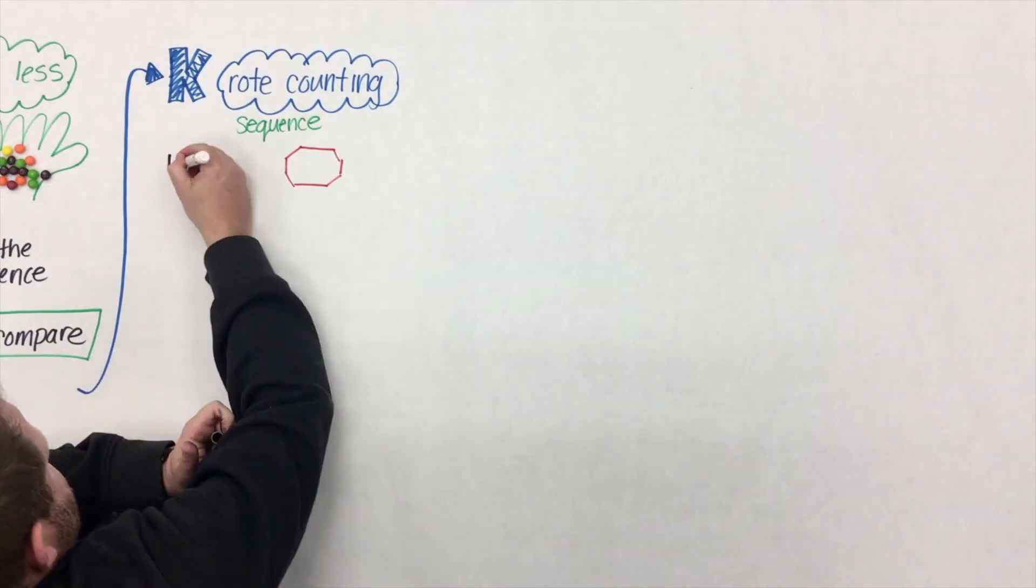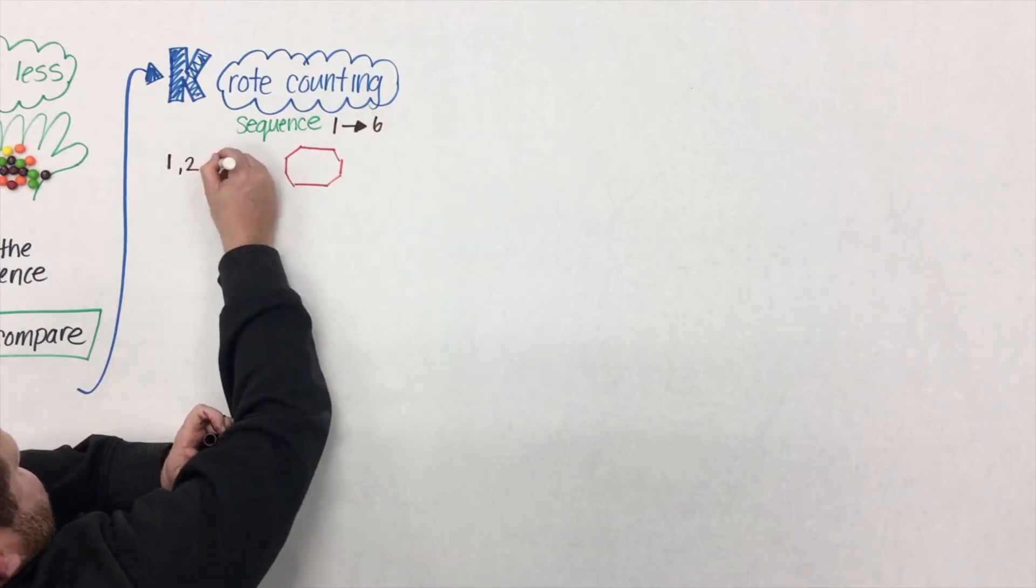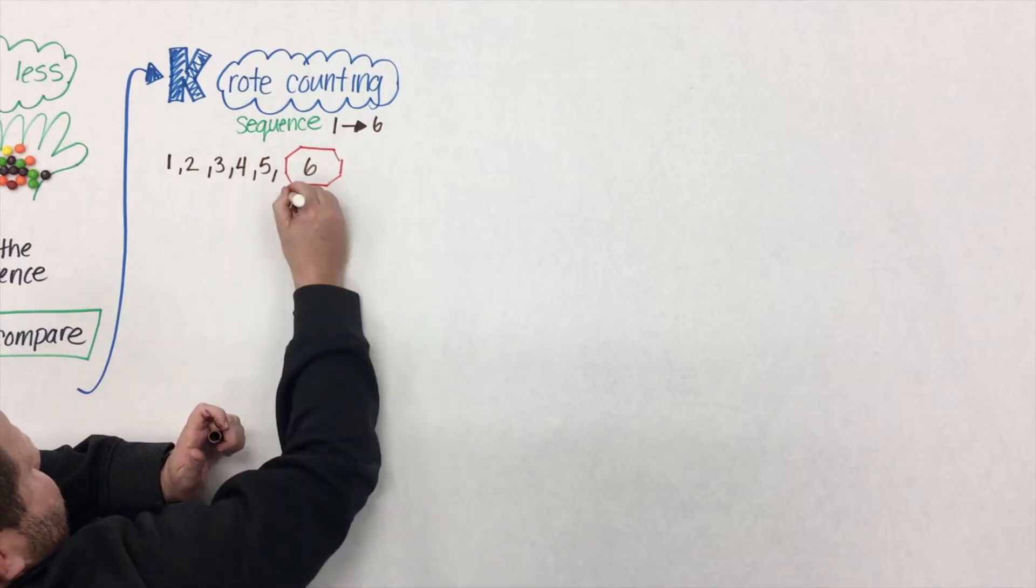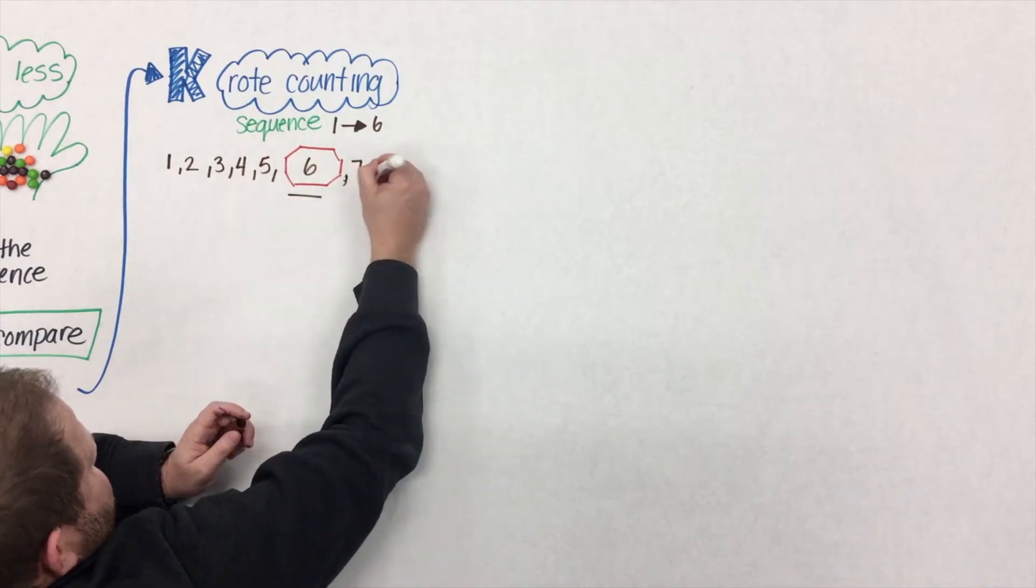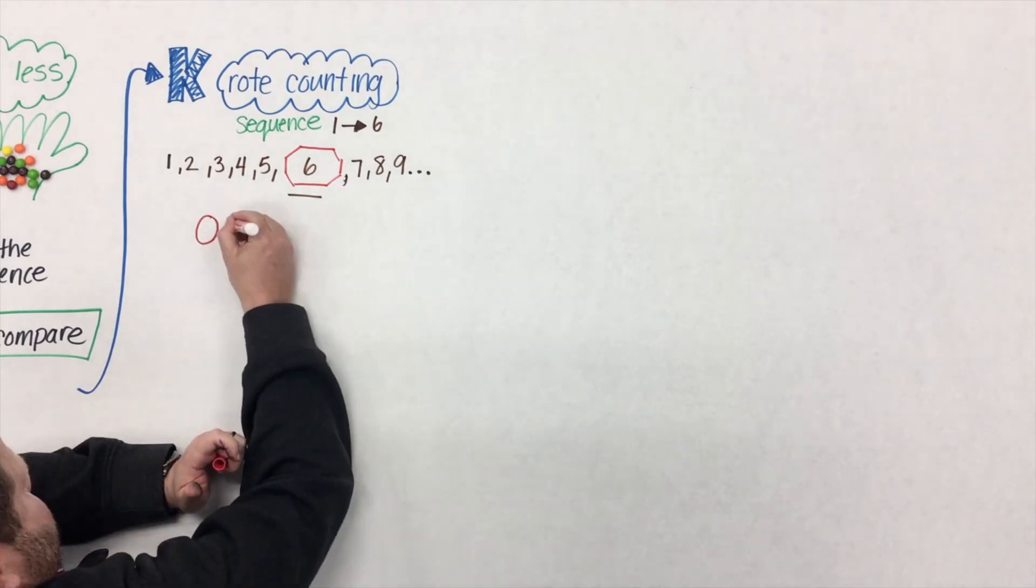An example of that would be if we asked a student to count from 1 to 6, they might say 1, 2, 3, 4, 5, 6, 7, 8, 9, 10. We said stop at 6, but you know what? They can't. They have no idea where 6 is in that count sequence.